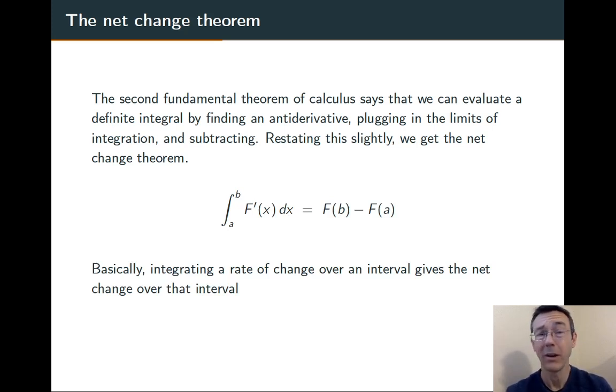Integral from a to b, f prime of x dx equals f of b minus f of a. This really is just a special case of that second fundamental theorem of calculus, because of course f is an antiderivative of f prime. Basically, it says that if you integrate a rate of change, you get the net change over the interval.